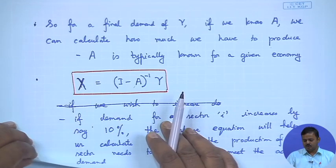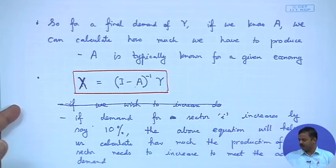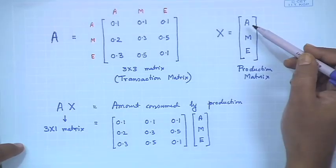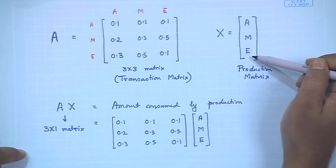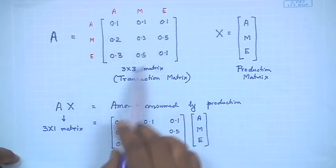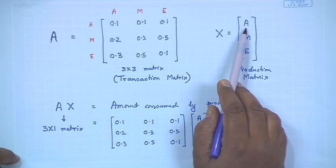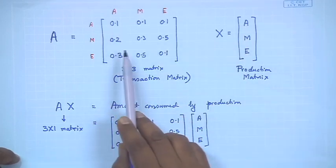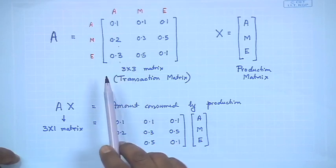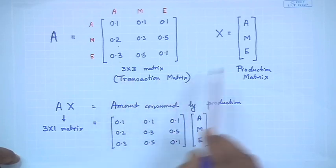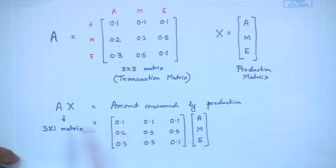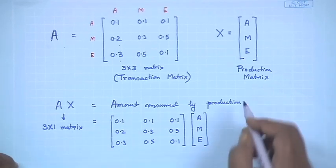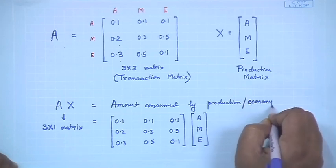Let us go back and solve the simple problem we were talking about, where we considered three sectors — agriculture, manufacturing, and energy. The A matrix turned out to be as stated, because to produce one unit of agriculture we need 0.1 unit of agriculture, 0.2 units of manufacturing, and 0.3 units of energy. Similarly for manufacturing and energy. This is the transaction matrix A; x is the production matrix which is unknown, and therefore the product A times x is the consumption matrix — the amount consumed by production.